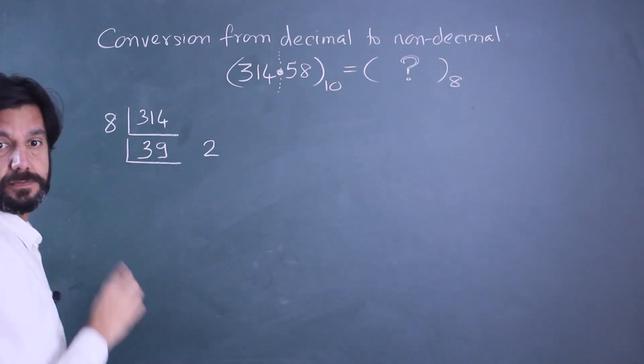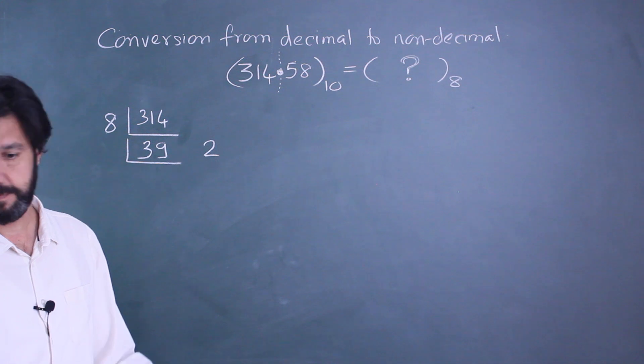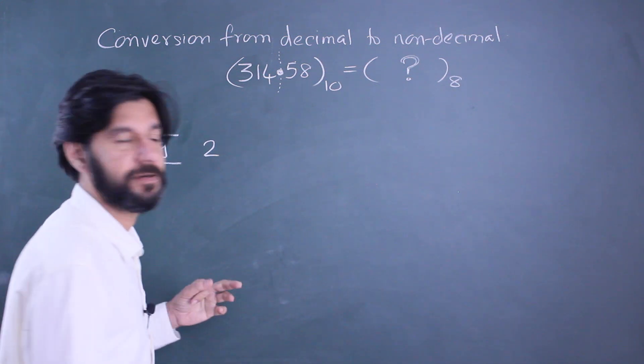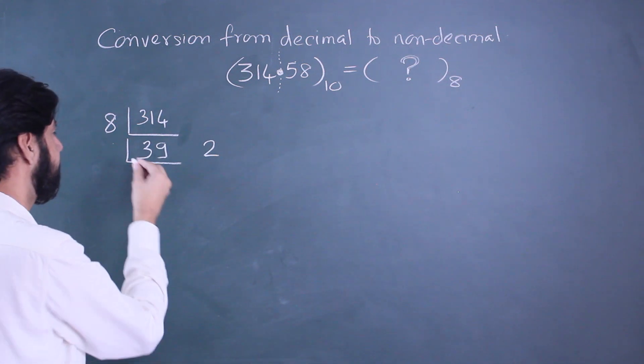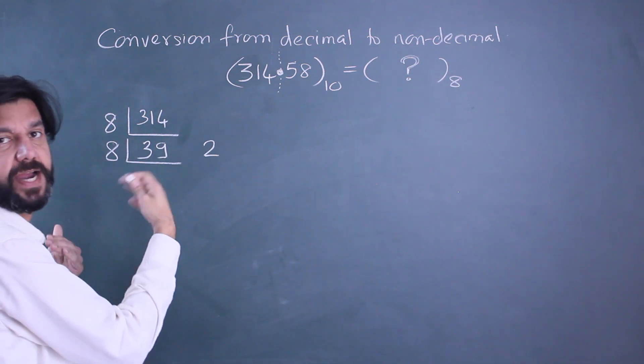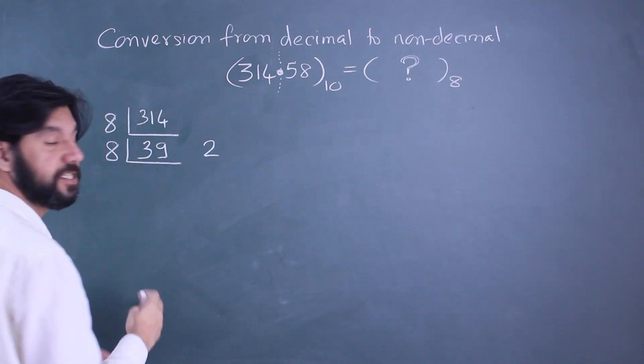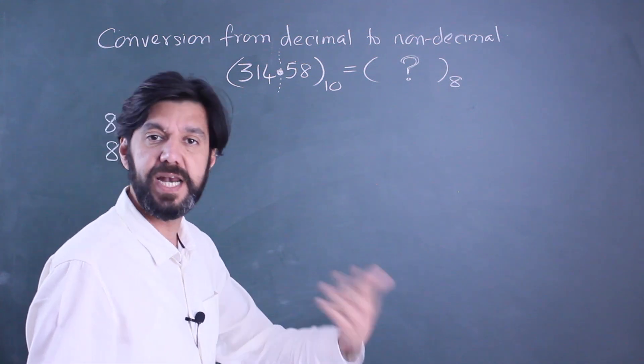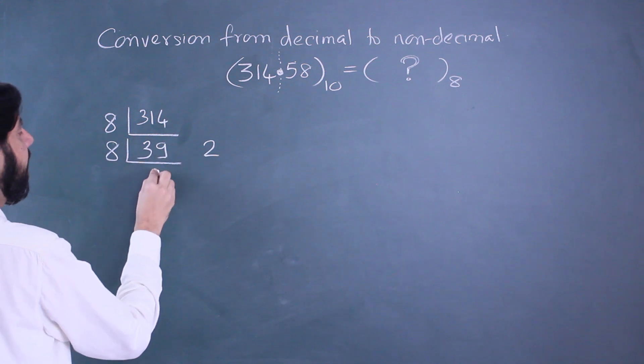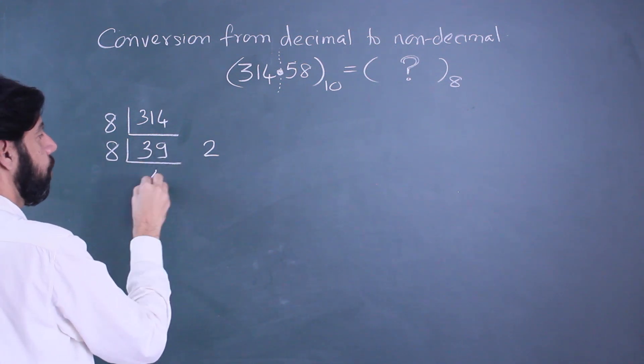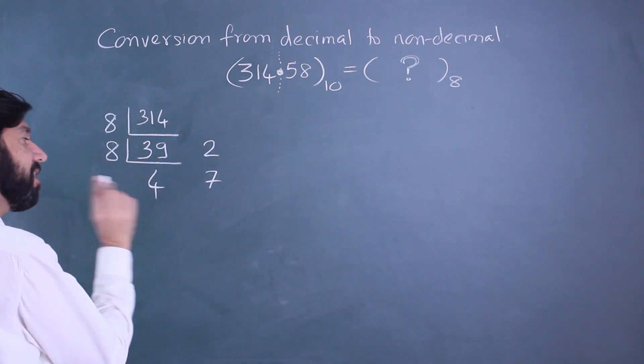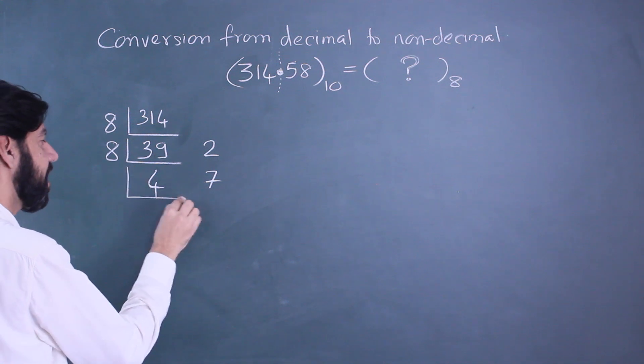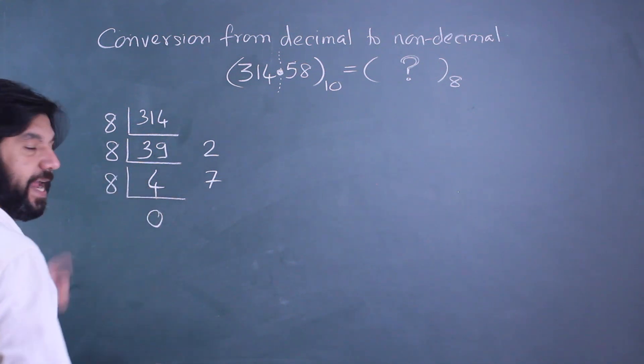Keep dividing by 8 till the time it is not divisible further, that is you get a number less than 8. 8 fours are 32, so 32 will leave a remainder of 7.